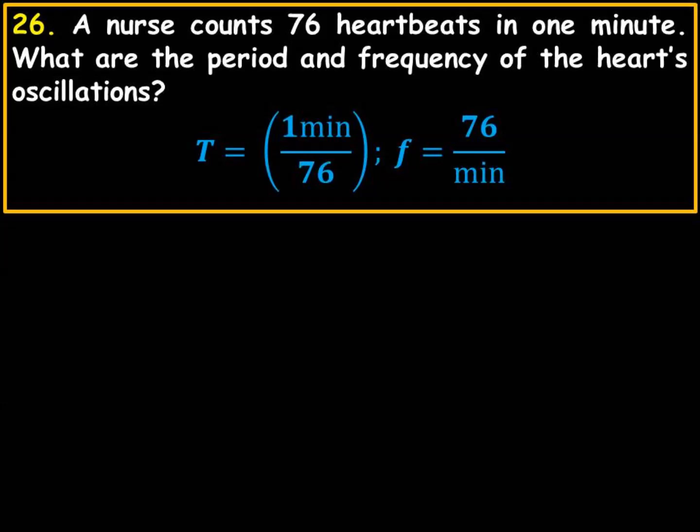We would use seconds, but if you use minutes for this problem, it would be one minute per 76 cycles or 76 cycles per one minute. One is the period and one is the frequency. You could certainly put these notes on your outline and use these for tomorrow's quiz.